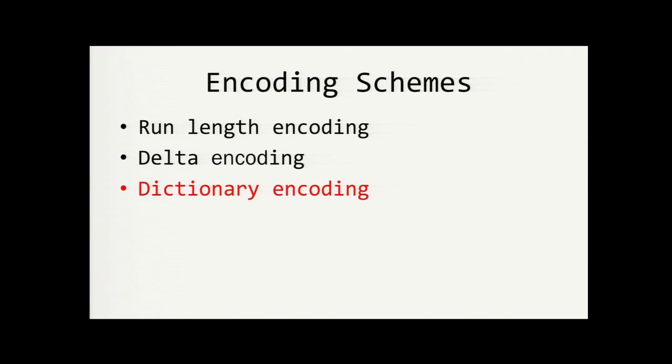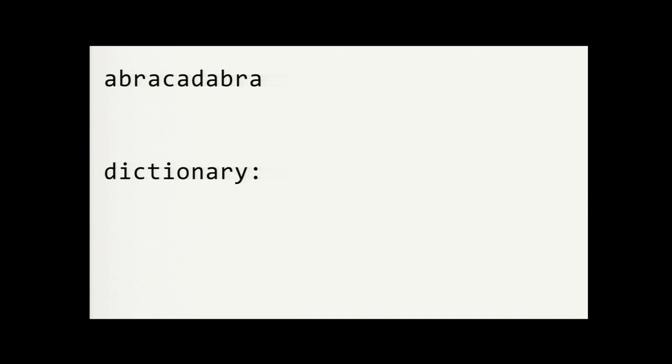A third type of encoding is dictionary encoding. And the simplest example of this would be a dictionary that just contains all of the individual data symbols that are encountered. So we add each symbol into the dictionary the first time that we see it. Our example word is abracadabra, and the first symbol is A. So add it to the dictionary and just assign it a value of 1. The next symbol is B. We assign it a value of 2. R is 3, and A is already in the dictionary. Its value is 1, so just add that to the output. C is 4, and so on until we're done.